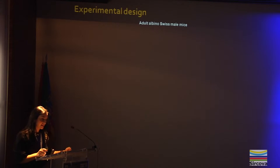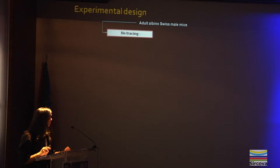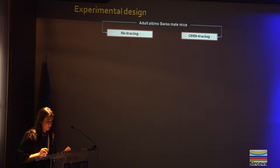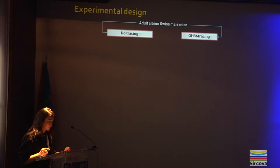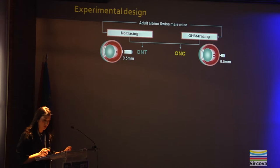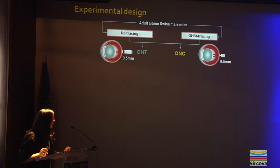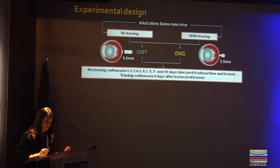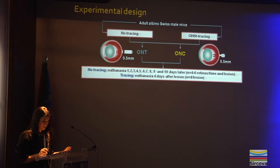For our work, we used adult albino mice divided into groups: tracing from the superior colliculum or no tracing. The tracing was performed one week before injury, because this is the time required for the tracer to label ganglion cells from the superior colliculum. Animals were then subjected to optic nerve crush or optic nerve transection. Both injuries were done at the same distance from the optic disc, 0.5 mm, and always to the left optic nerve. Animals were sacrificed at increasing time points, from one to ten days for non-traced animals, and at four days for traced animals, because this is when the peak of active caspase-3 expression was found.